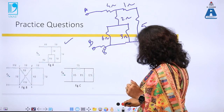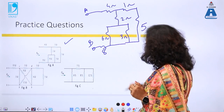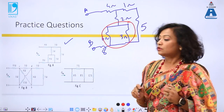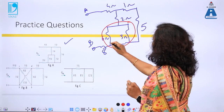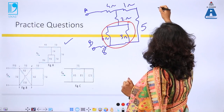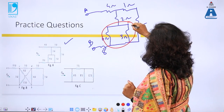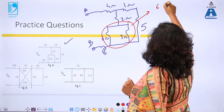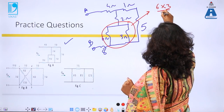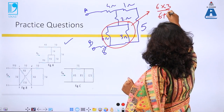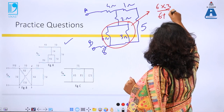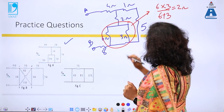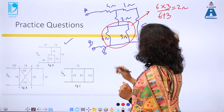First, 6 Ω and 3 Ω are in parallel. Their equivalent resistance is (6 × 3)/(6 + 3) = 18/9 = 2 Ω.